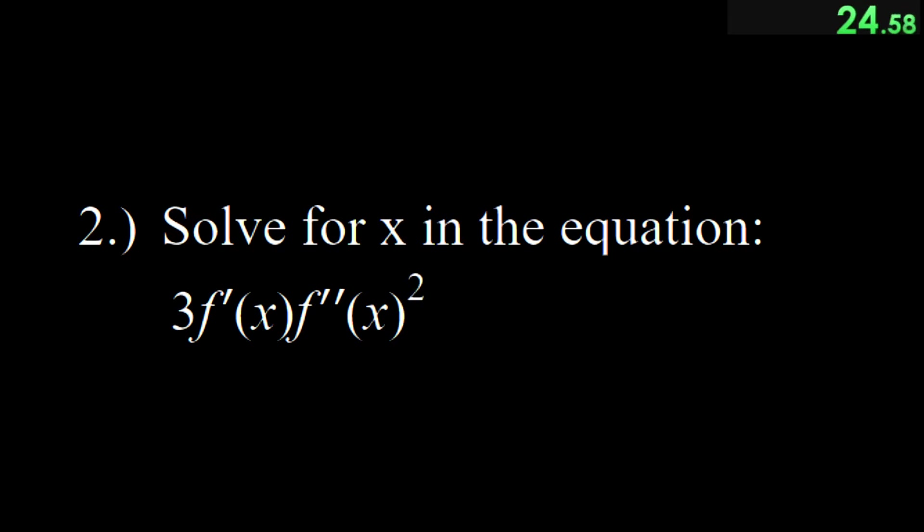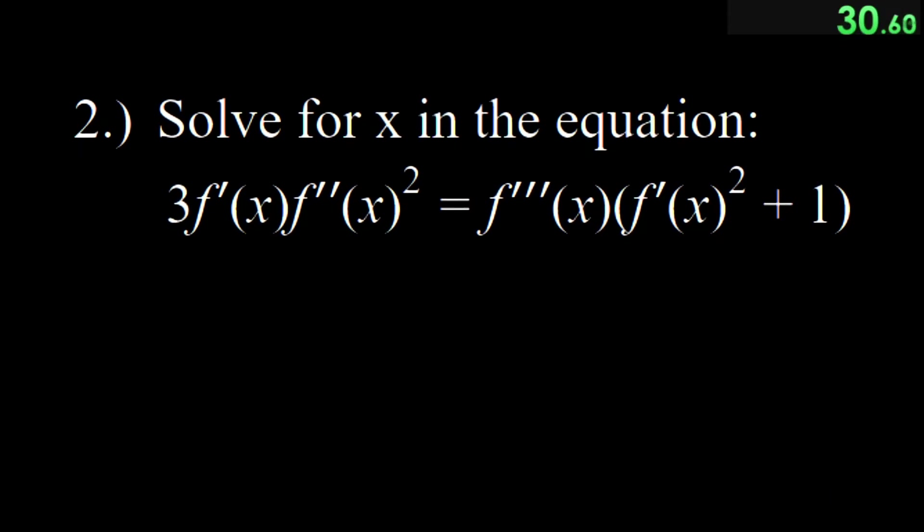Step 2. Find 3f prime times f prime prime squared equals f triple prime times f prime squared plus 1. Plugging these f's, we get 3 e to the x times e to the x squared equals e to the x times e to the x squared plus 1.